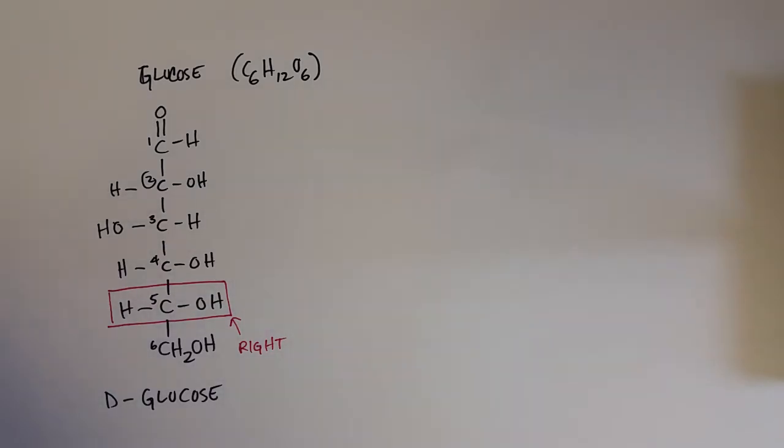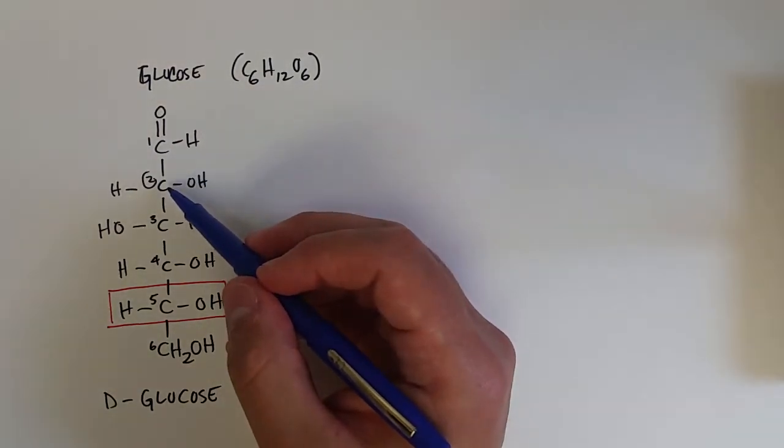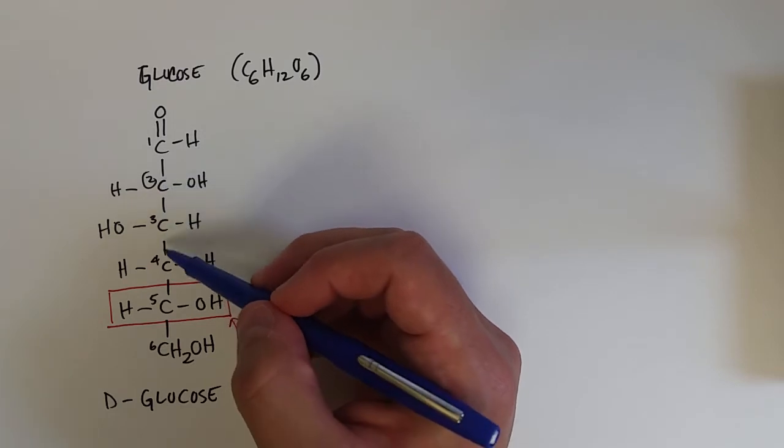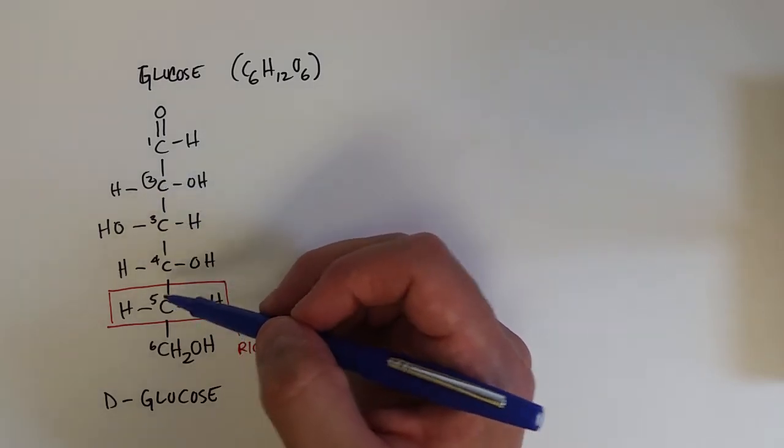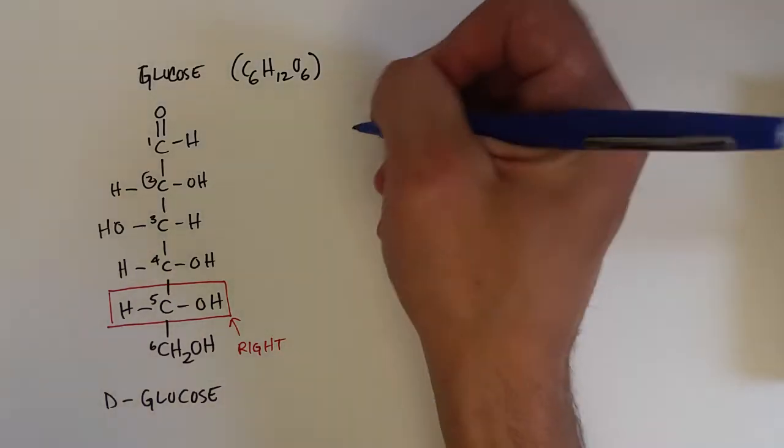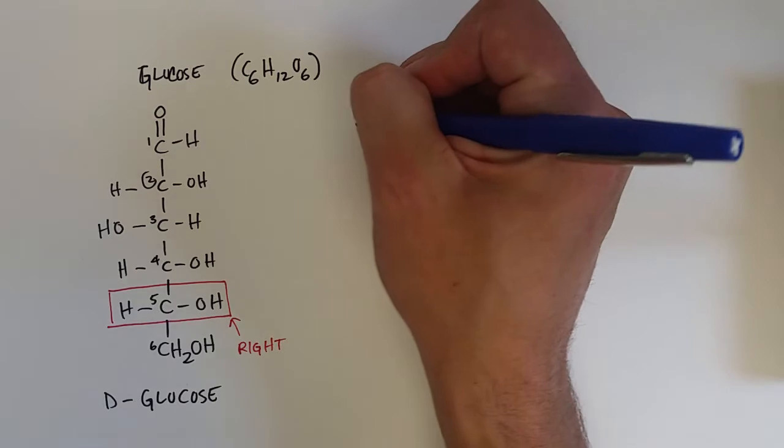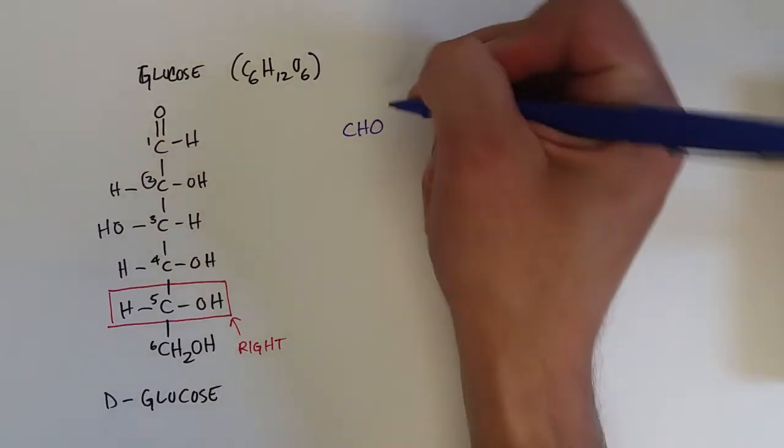When we draw Fisher projections, we can actually save a little bit of time by not drawing all of these carbons—these inner carbons two through five—just like we did in organic chemistry when we started drawing skeletal formulas. We can sort of do that for carbohydrates as well.